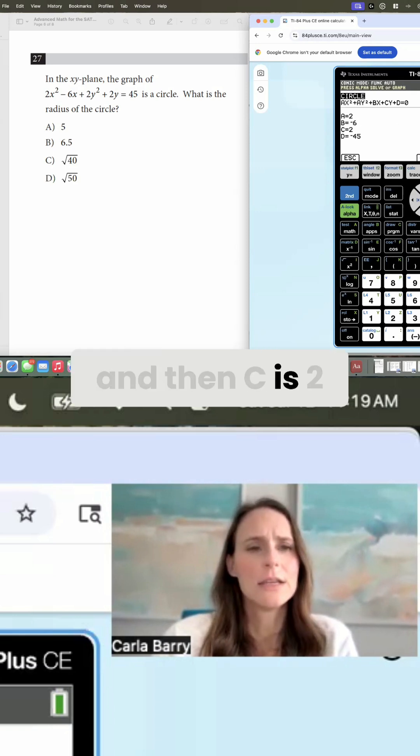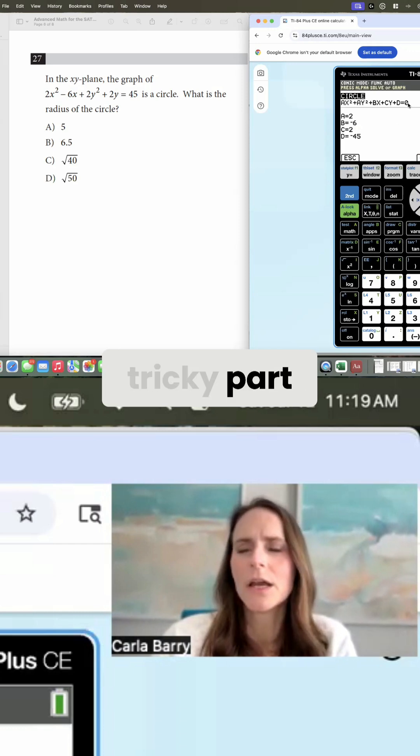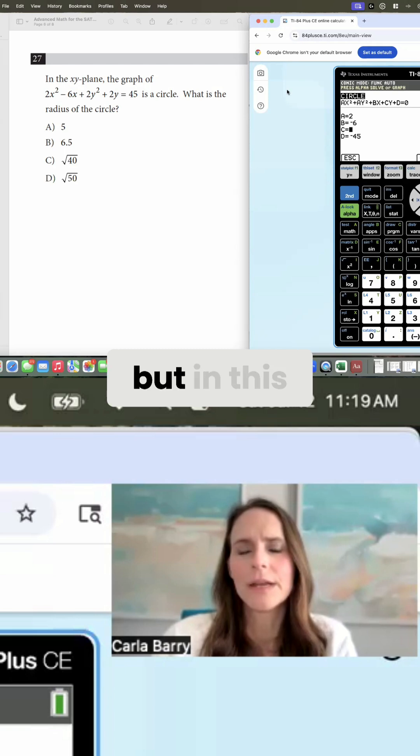And then c is 2. C is my y coefficient. And here comes the tricky part. Notice how in the calculator it equals 0, but in this question it equals 45. We have to make the question match the calculator. So you're going to subtract 45 from each side of this equation. And get d is negative 45.